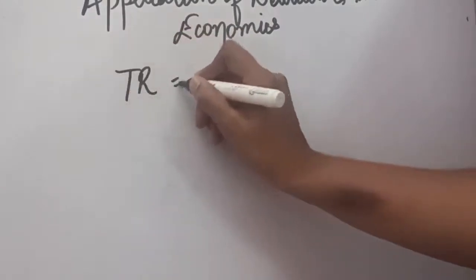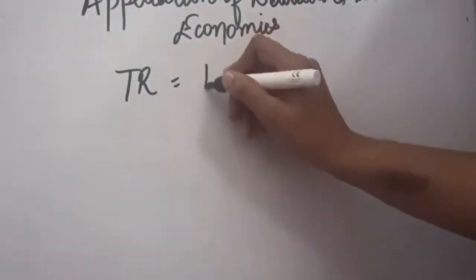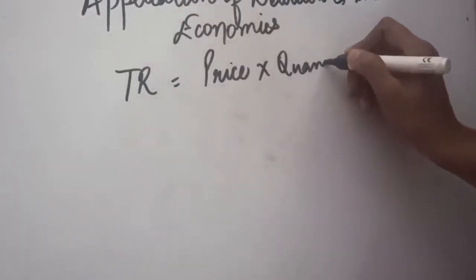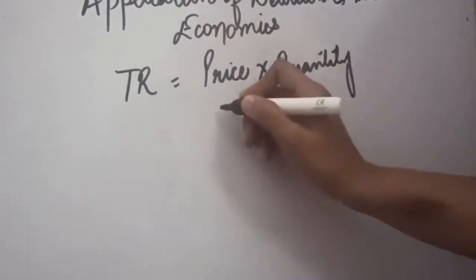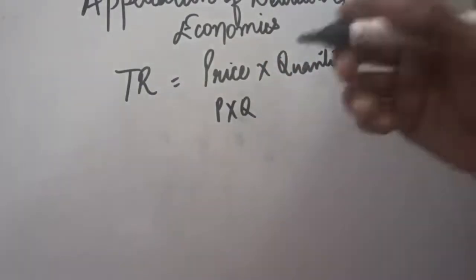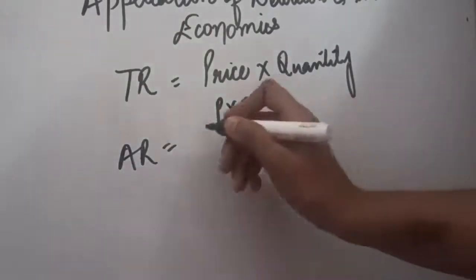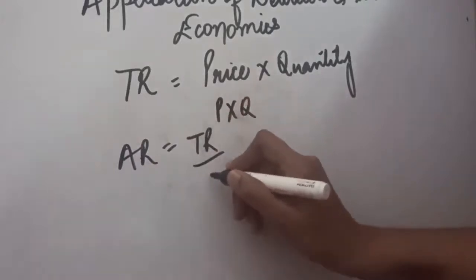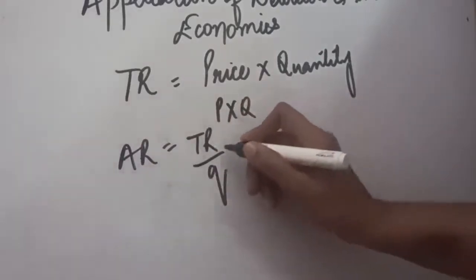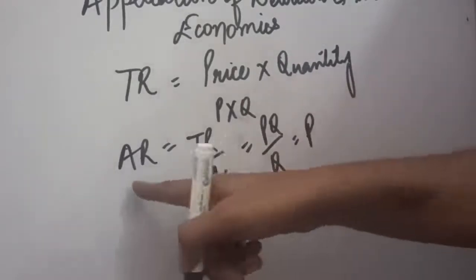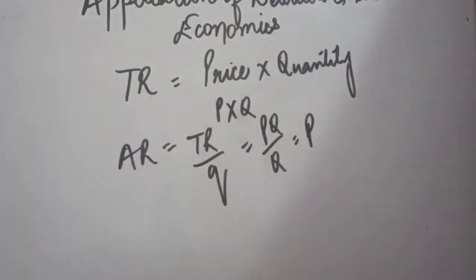Next, information on total revenue may be asked. Total revenue is calculated by price multiplied by quantity — p × q gives us the value of total revenue. If average revenue has been asked, it is total revenue divided by quantity: pq/q = p. So average revenue is actually the price only.